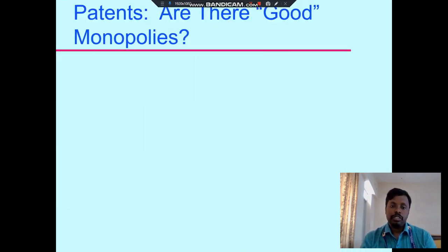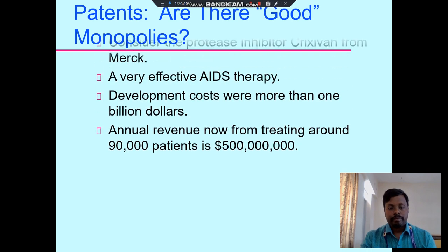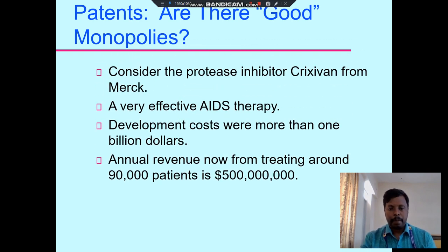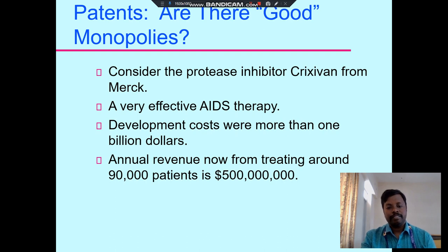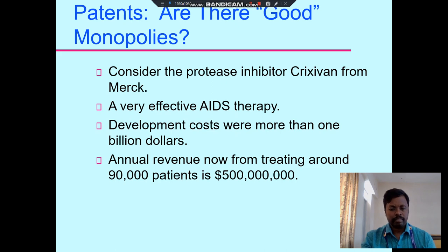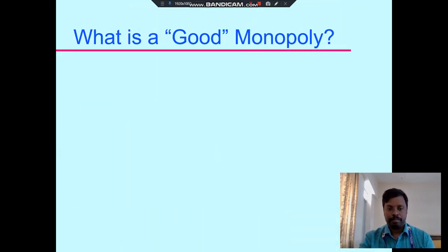There are also good monopolies. For example, in the pharmaceutical industry, drug development costs can be more than one billion dollars, and a firm retains annual revenue from that product. This is an example of a good monopoly.